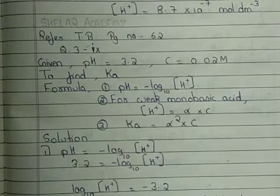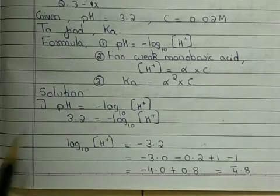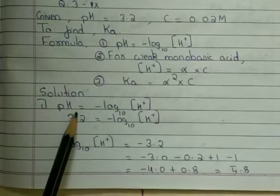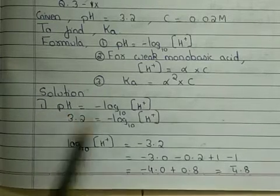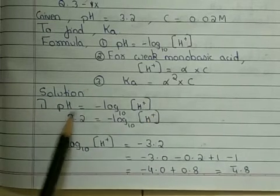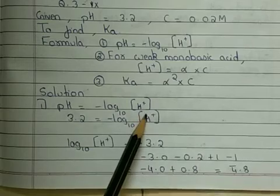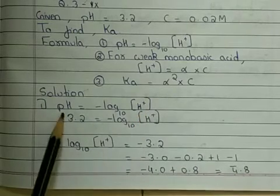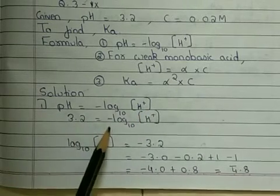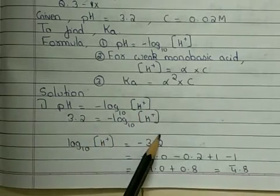Let us see the first step. The first step is to find out the H plus ion concentration. So pH is equals to minus log to the base 10 of H plus ion. pH value 3.2 is equals to minus log to the base 10 of H plus ion.